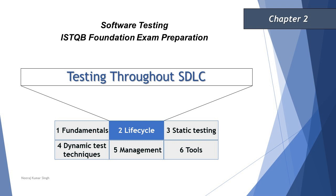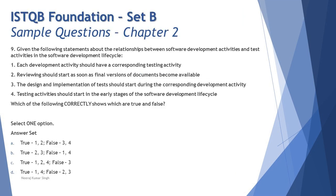Hello friends, greetings for the day, welcome back to another tutorial on our foundation level sample paper discussions. We are getting started with chapter two of set B. Chapter two will have five questions out of 40, contributing five marks out of 40 marks altogether. It is an important chapter and you need to make sure you can answer five questions from this chapter once you're through with all the sample questions.